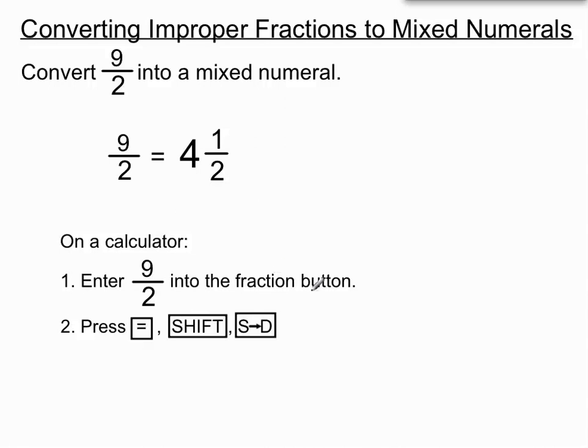So we enter it into our calculator using the fraction button. We press equals to get it locked in. And then we go shift, S to D button. And that should give us our mixed numeral out of our improper fractions. A bit tricky, but if we're allowed to use our calculator, we probably should, even just to check our normal manual work.